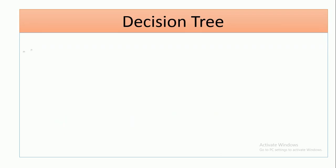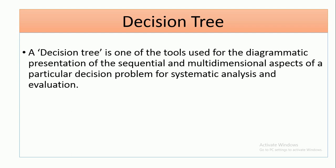What do you mean by decision tree? A decision tree is one of the tools being used for a diagrammatic presentation of the sequential and multidimensional aspects of a particular decision problem for systematic analysis and evaluation. So it is a tool that involves the use of diagrams to show the sequential and multidimensional aspect of a particular decision problem.